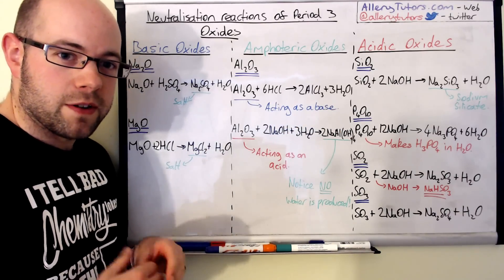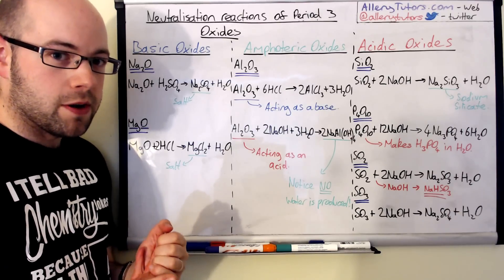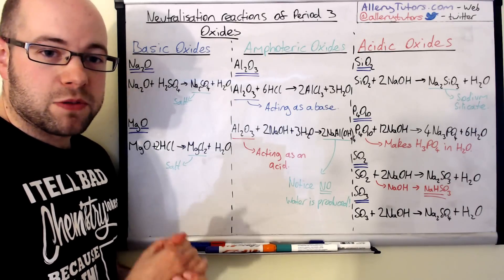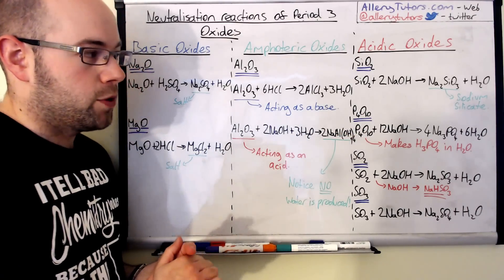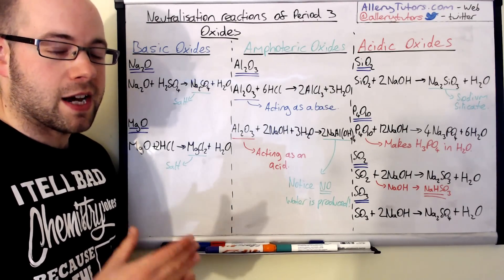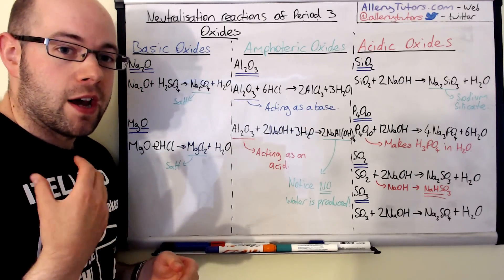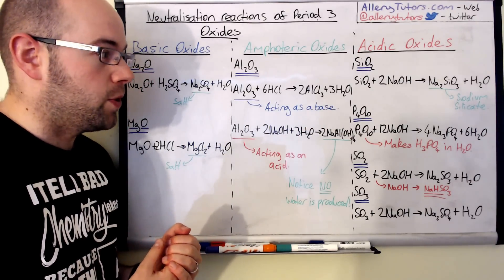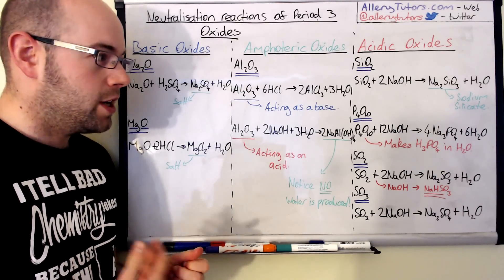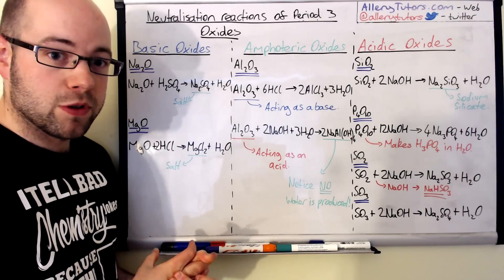The next acidic oxide is phosphorus pentoxide. P₄O₁₀ — which can also be written as P₂O₅, hence the name phosphorus pentoxide — will react with 12 moles of sodium hydroxide to form sodium phosphate (your salt) plus water. Another standard acid-base reaction. Importantly, phosphorus oxide also reacts with water to form phosphoric acid — that's why we say the oxide is acidic, and it then reacts with a base to form a salt plus water.